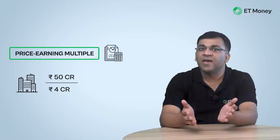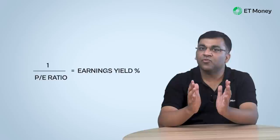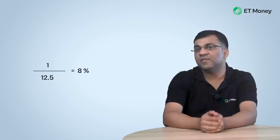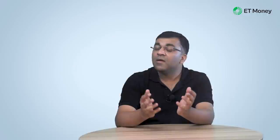Most of us are comfortable with the price-to-earnings multiple, or the P/E ratio. The P/E ratio gives us the price or valuation of a business as measured against a rupee of profit. So if a company is valued at 50 crores and delivers a profit of 4 crores, the P/E ratio is 50 divided by 4, which comes to 12.5. When you inverse the P/E ratio, the result is the earnings yield. A P/E of 12.5 gives an earnings yield of 1 divided by 12.5, which is 8%. This earnings yield is a fluid number that changes with movements in market cap and profits.